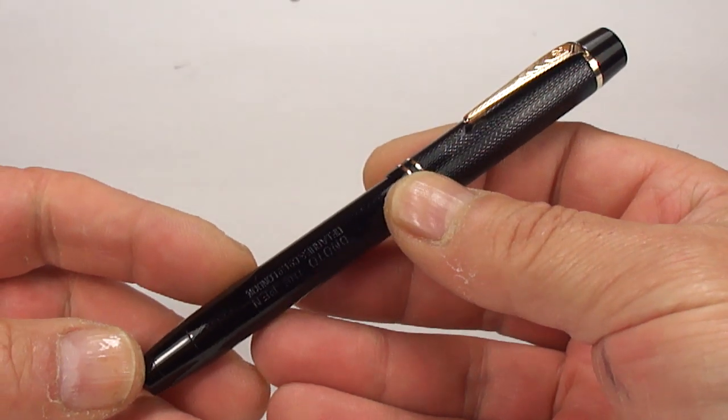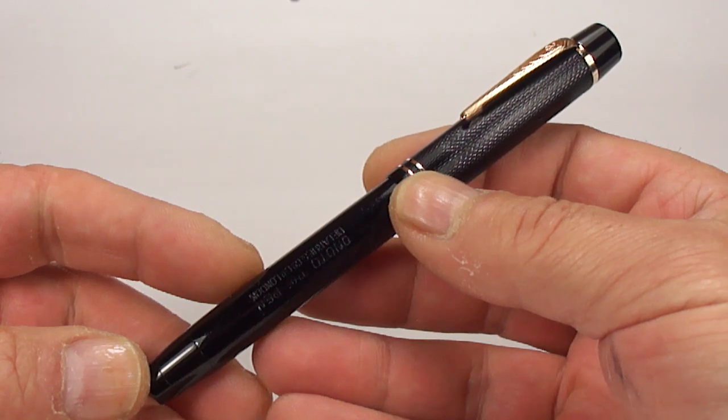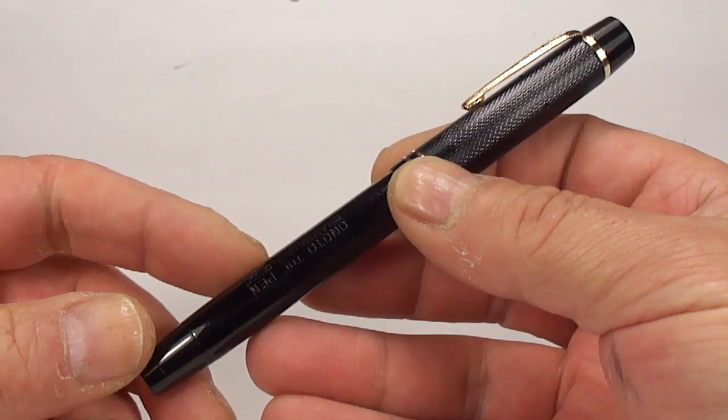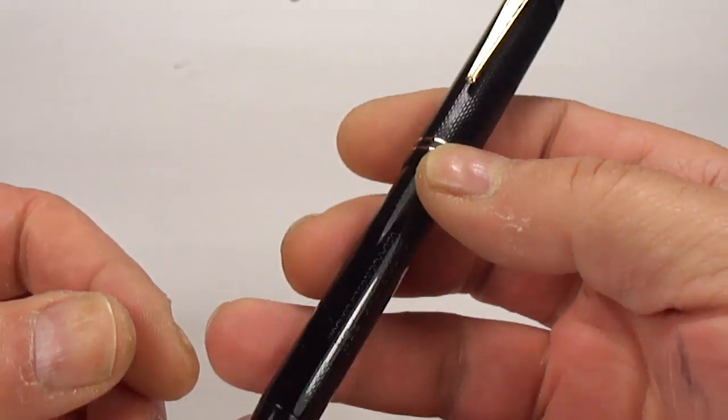As I say, this is the Onoto the pen. I date the pen late sort of 1940s through to sort of mid-1950s. As you can see, it comes in this lovely black hard rubber.